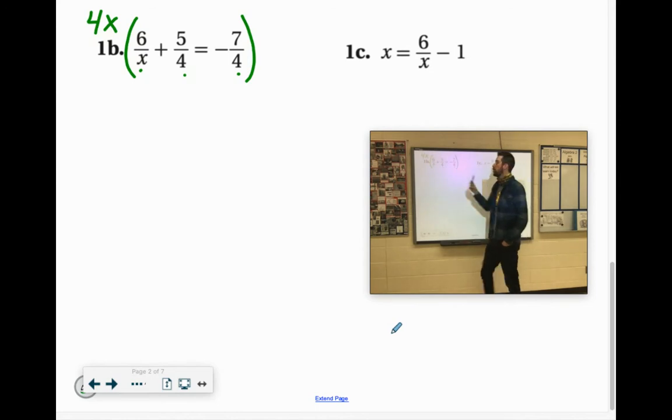And remember, you can do 4x times 6, 24x, and then divided by x would just be 24. Or like I said on the last example, it was kind of rushed. But you can also, we know the fractions are going away, so you can just multiply by what is missing in the denominator.